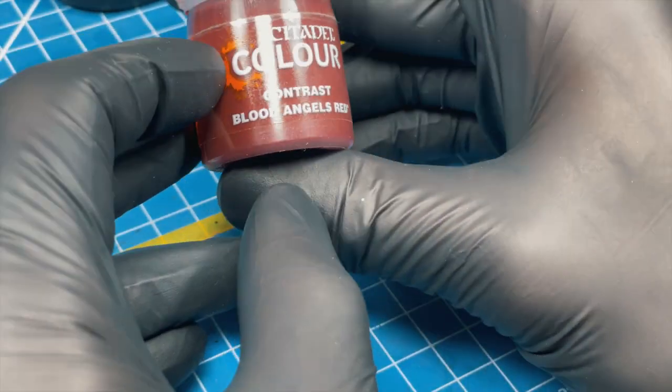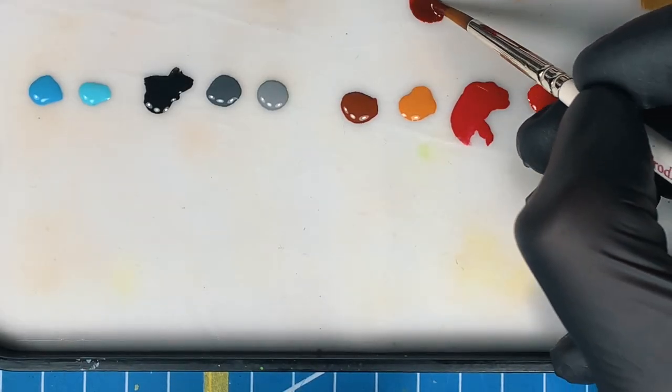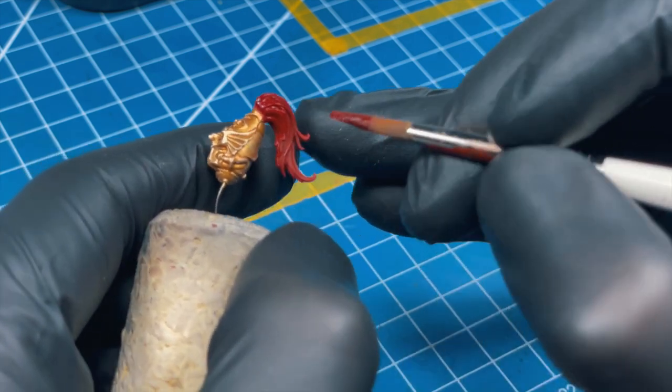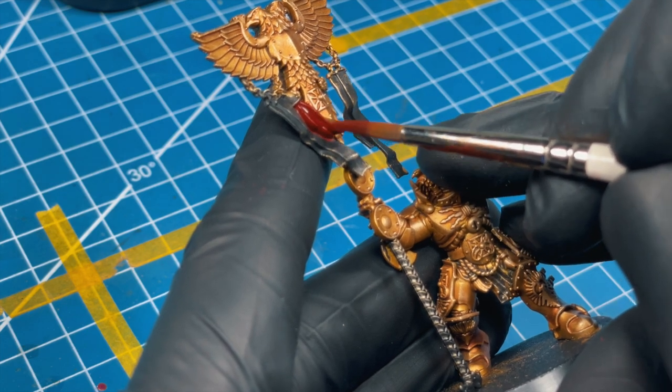To add some depth to the color, grab your Blood Angels Red contrast paint and use it as a wash. Paint it over the previous color we painted.